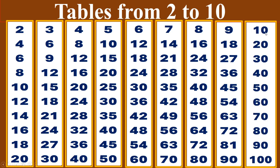Ten times table. Ten ones are ten. Ten twos are twenty. Ten threes are thirty. Ten fours are forty. Ten fives are fifty. Ten sixes are sixty. Ten sevens are seventy. Ten eights are eighty. Ten nines are ninety. Ten tens are one hundred.